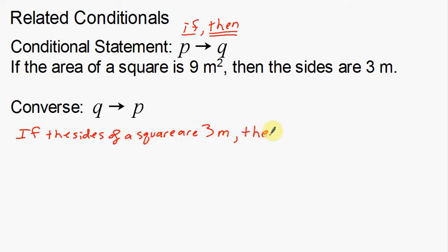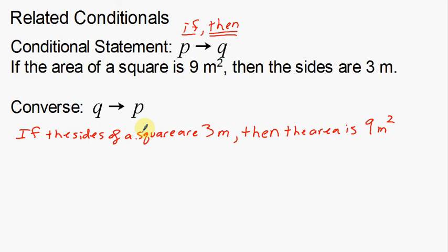Now I can write the conclusion part of my statement: then the area is 9 meters squared. Notice I didn't add 'of the square' again there — I took the hypothesis part and put it at the end because this is a converse: if P then Q becomes if Q then P. The 'of a square' part stayed at the beginning so we know what we're talking about. You've got to use your English skills to make sure these sentences make sense when you write converses, inverses, and contrapositives.